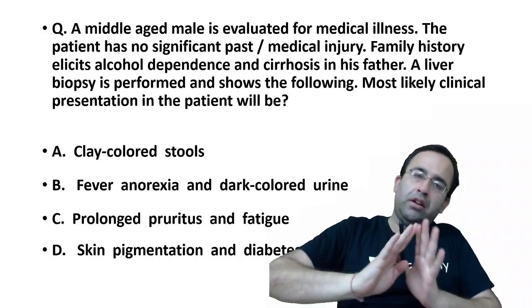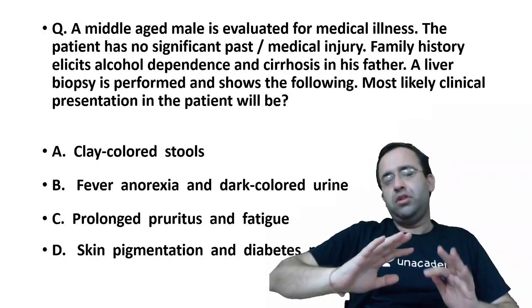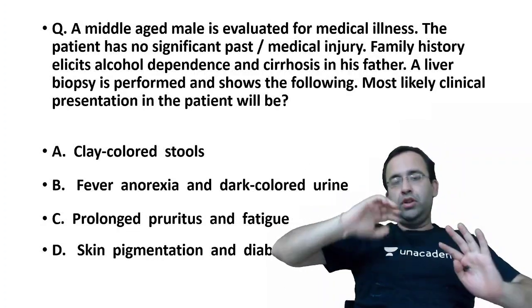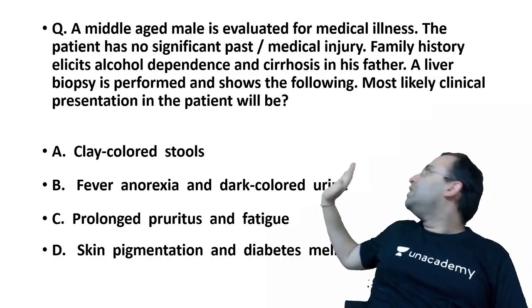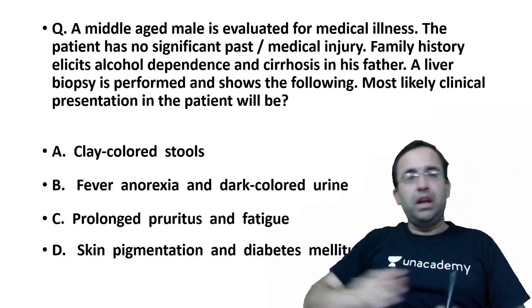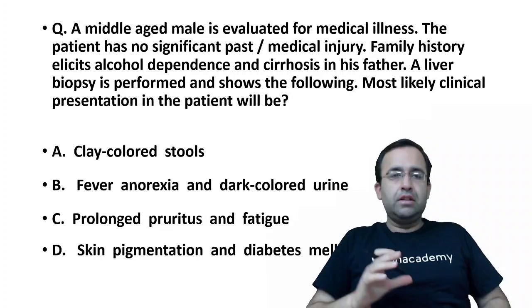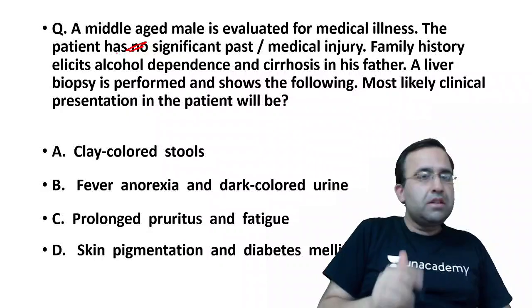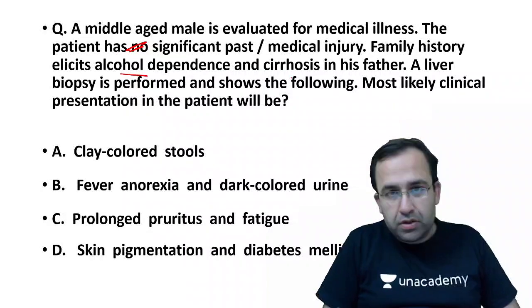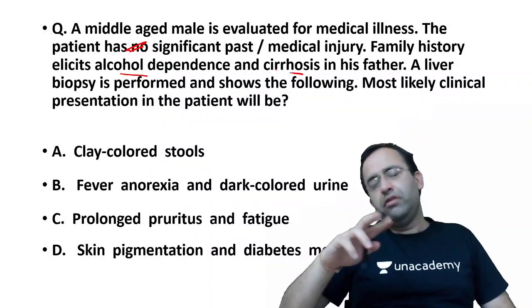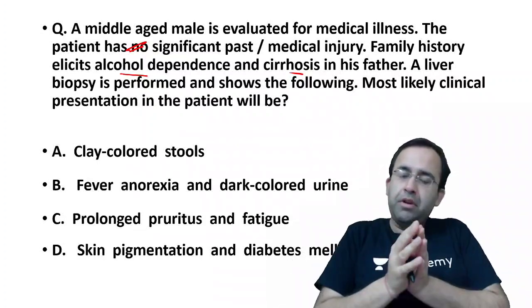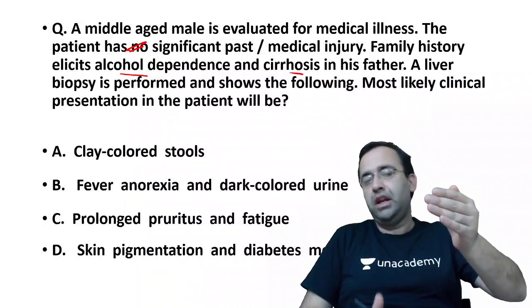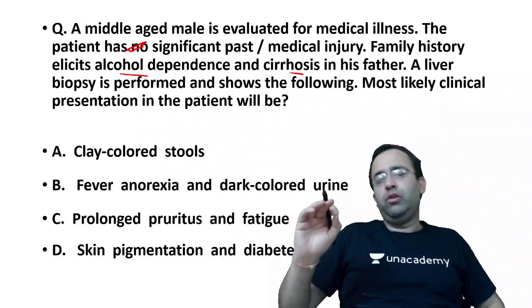Let us have a look at a clinical-based question from liver in today's session. The question shows that a middle-aged male is evaluated for medical illness. Patient had no significant past or medical history. Family history elicits alcohol dependence and cirrhosis — cirrhosis because of alcohol intake. Liver biopsy is performed and shows the following. Basically, the examiner is telling you that a middle-aged male has come with the following liver biopsy.